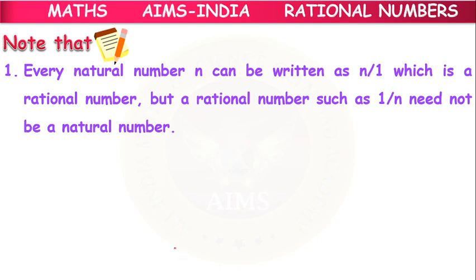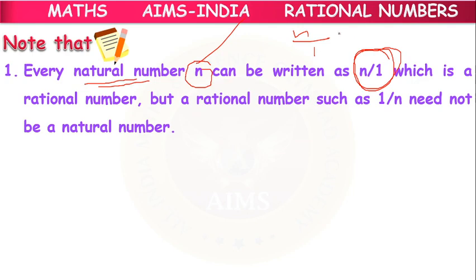Here are some important points to note. Every natural number n can be written as n by 1, which is also equal to n — so it is a rational number. But a rational number such as 1 by n cannot be written as n, because 1 by n is not equal to n. So every natural number can be written as a rational number, but a rational number cannot always be written as a natural number.